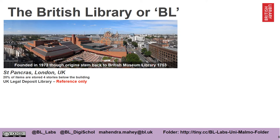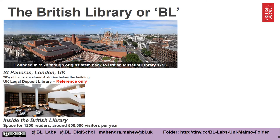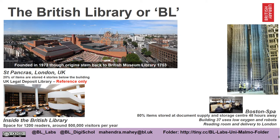The library is a legal deposit library, which means that you can only look at the items within the building — it's a reference library, you can't take anything out. Inside the library there is space for about 1,200 readers and we get about half a million visitors per year. 80% of our collections are actually stored about 200 kilometres away in a factory-based location in Boston Spa near Leeds. These are huge warehouses, some of them use low oxygen and robots where we store the majority of our materials.